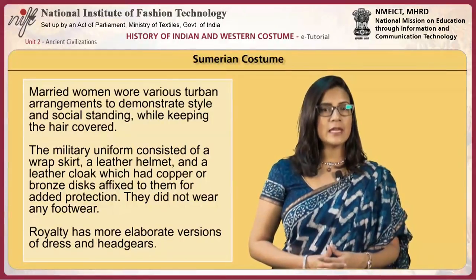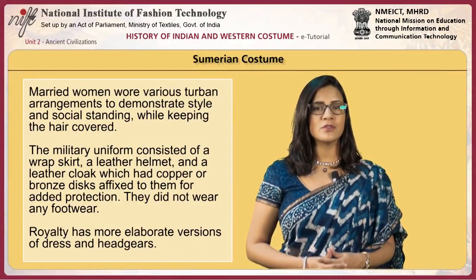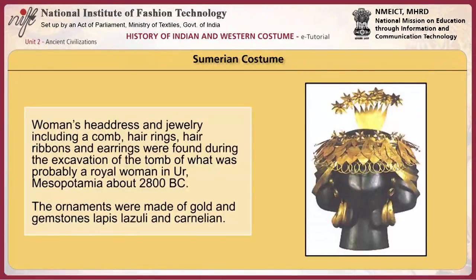Royalty had more elaborate versions of dress and headgear. Women's headdress and jewelry, including a comb, hair rings, hair ribbons, and earrings, were found during the excavation of the tomb of what was probably a royal woman in Ur, Mesopotamia, about 2800 BCE. The ornaments were made of gold and gemstones, lapis lazuli and carnelian.